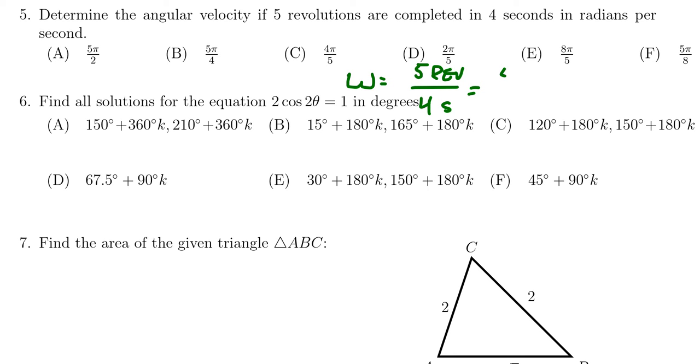So one revolution is equivalent to two pi radians, like so, and then we have the four seconds here.